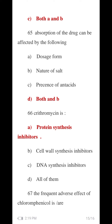Both A and B — D number option is correct. The next number is Clarithromycin. Clarithromycin is a protein synthesis inhibitor acting on 50S ribosomes. The A number option is correct.